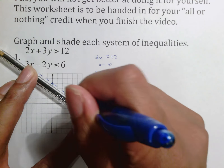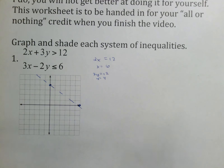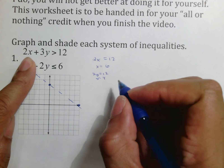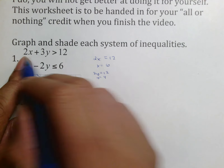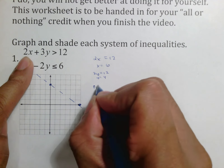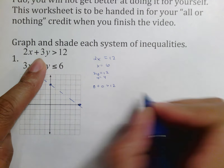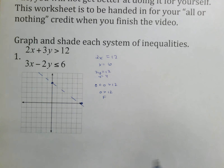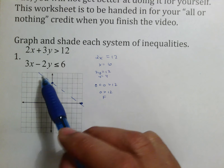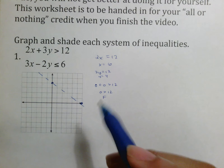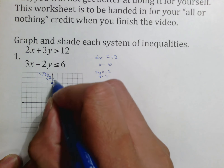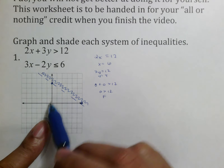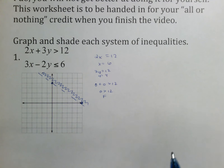After that, as we've learned, we test (0, 0): plugging in gives 0 + 0 > 12, which is 0 > 12 — that is false. Now here is what we do differently: yesterday if it was false we would have shaded the whole thing, but because we have two lines that's where we do the alligator teeth. We're not going to shade the whole region — we just put the little indicator showing that (0, 0) is false, so we shade above that line.